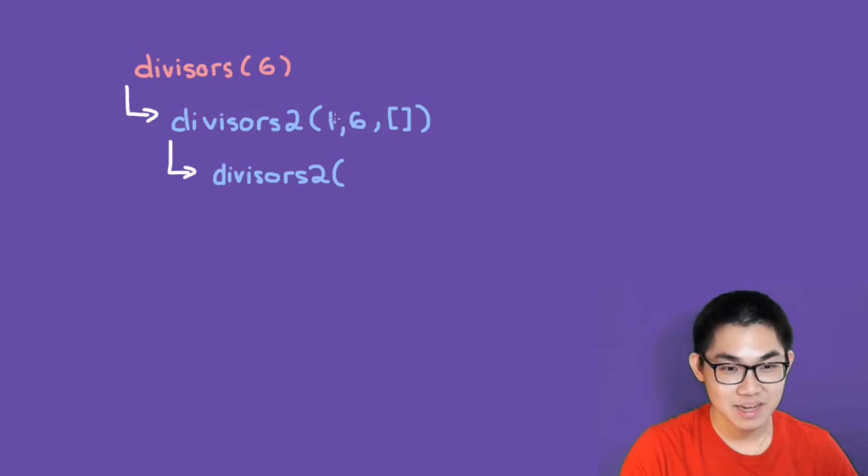And then this number is going to be incremented. So number 2, the second number stays the same. And how about the third parameter? Well, here, we're going to take 6 divided by 1. And since 6 can divide by 1, and the remainder is 0, then we basically add number 1 into this list. So now this list will have number 1 in it.